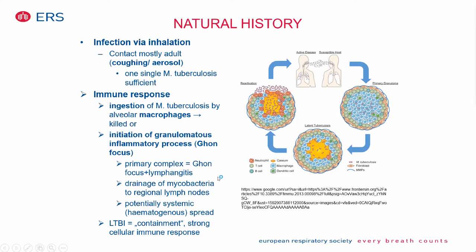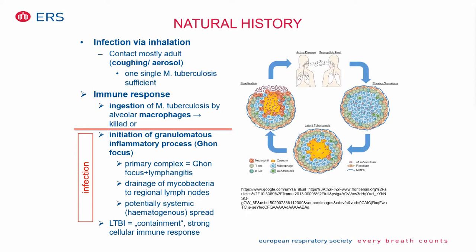The natural history of tuberculosis is that infection occurs mostly via inhalation, mostly from adult source cases coughing and generating aerosols. It is important to remember that one single mycobacterium might be sufficient to cause an infection. The mycobacterium tuberculosis is then ingested by alveolar macrophages, which are either able to kill it or an inflammatory granulomatous process starts.